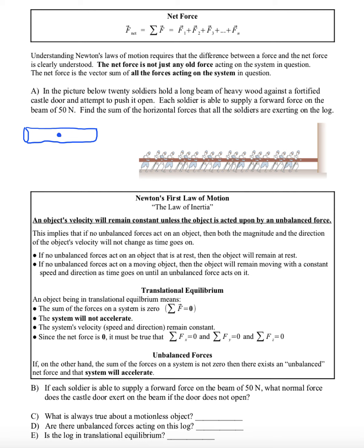When one soldier is holding the log, they can push with a forward force of 50 Newtons. But when we add additional people, each of them can also push with 50 Newtons. This has an additive effect to the total force that the people are exerting, and we would want to add all the arrows together.